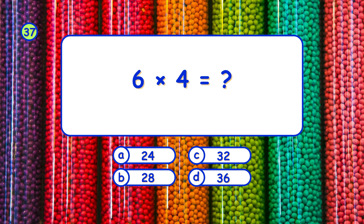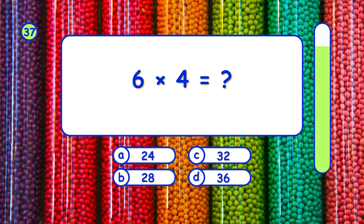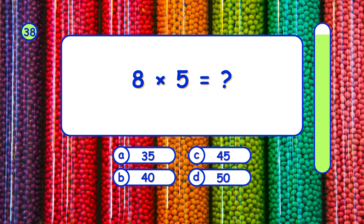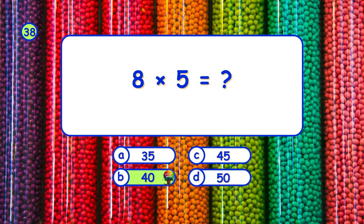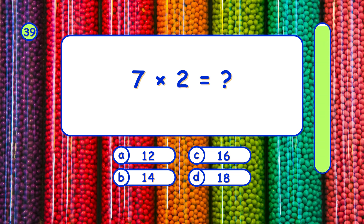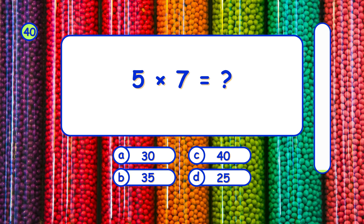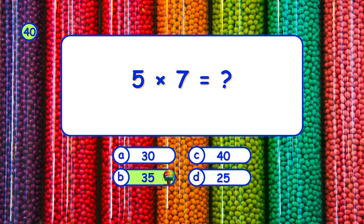What is 6 times 4? It's A, 24. What is 8 times 5? It's B, 40. What is 7 times 2? It's B, 14. What is 5 times 7? It's B, 35.